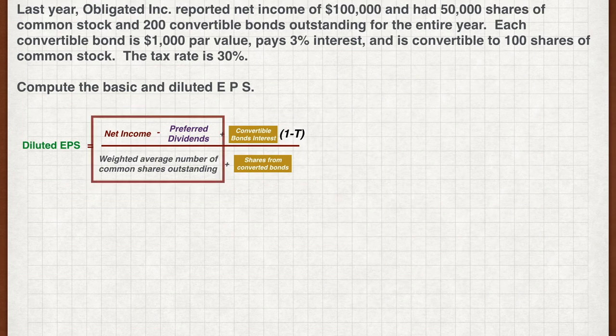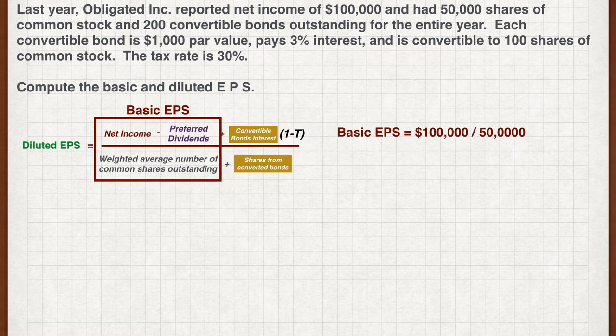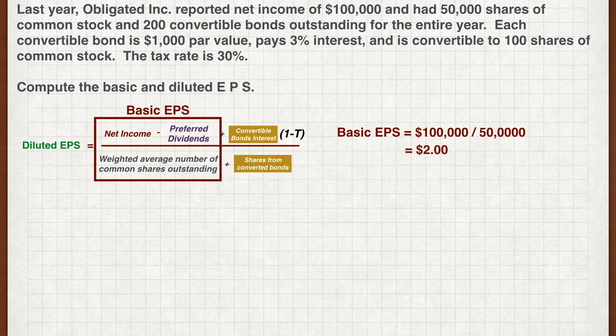Calculation for basic EPS is straightforward. There is no preferred stock, so all the net income goes to the common stockholders. The weighted average of the common stock is 50,000 for the year. Plugging all the figures into the formula, the basic EPS is $2.00.